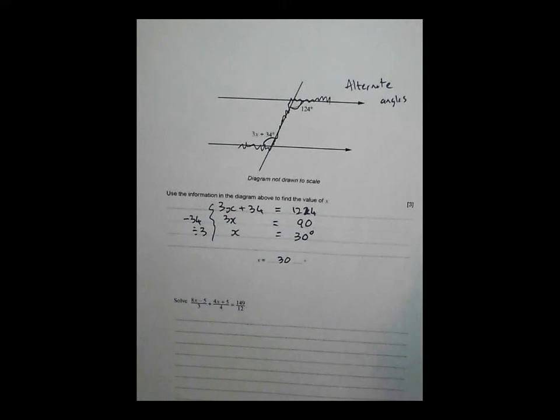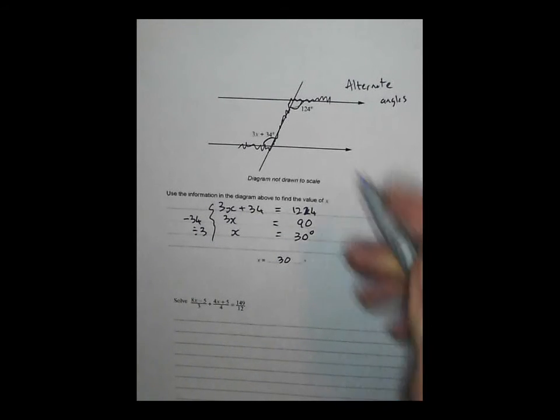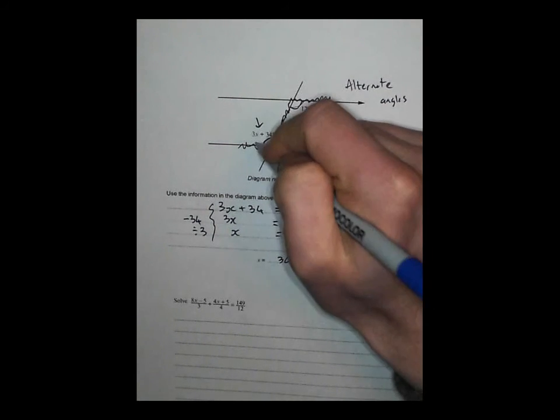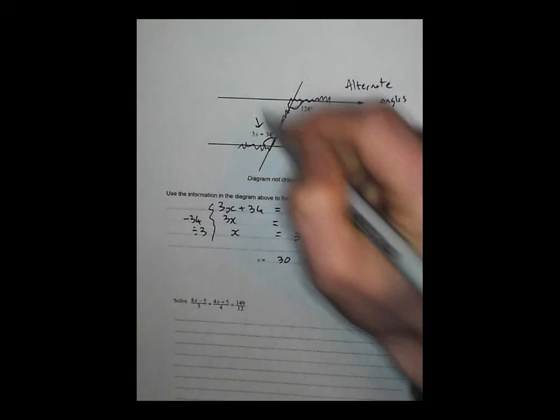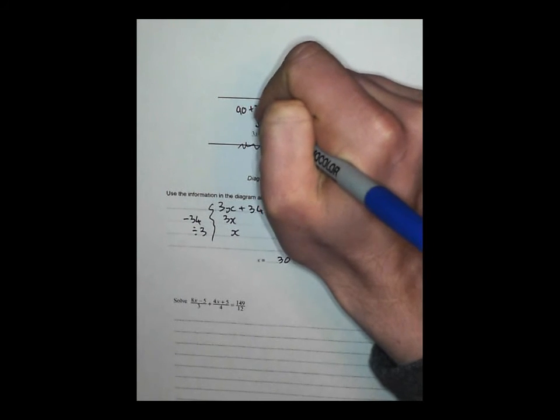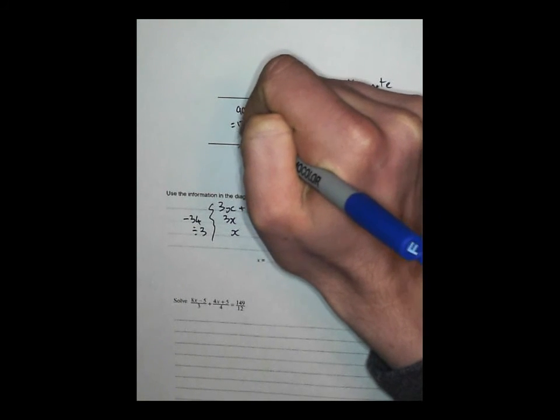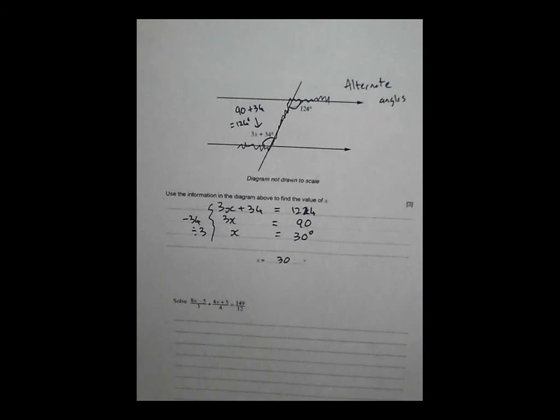But I'm not going to stop there, because this is 3 marks that I really need to get. So I'm just going to check that that's actually true. So if I substitute x back into there, I get 3 lots of x, 3 lots of 30 is 90. 90 plus 34 is equal to 124, and that balances nicely with that angle. So I'm pretty sure I've got that right.